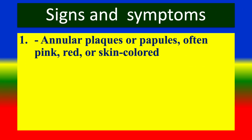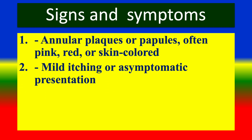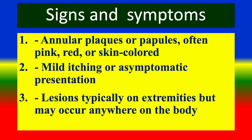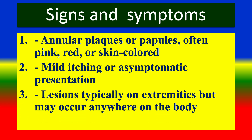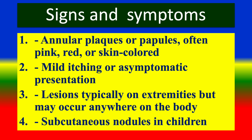Signs and symptoms include: annular plaques, often pink, red, or skin-colored; mild itching or asymptomatic presentation; lesions typically on the extremities but may occur anywhere on the body; and subcutaneous nodules in children.